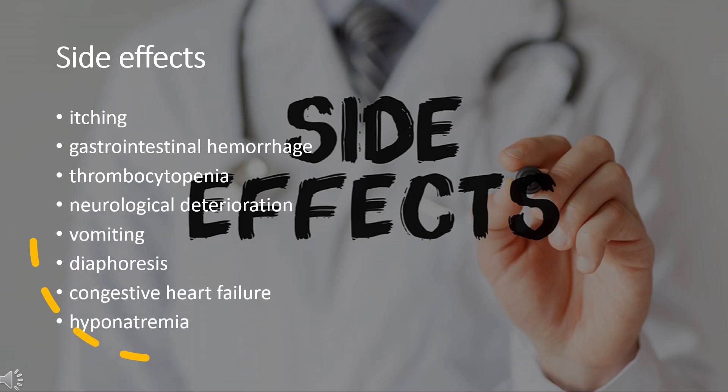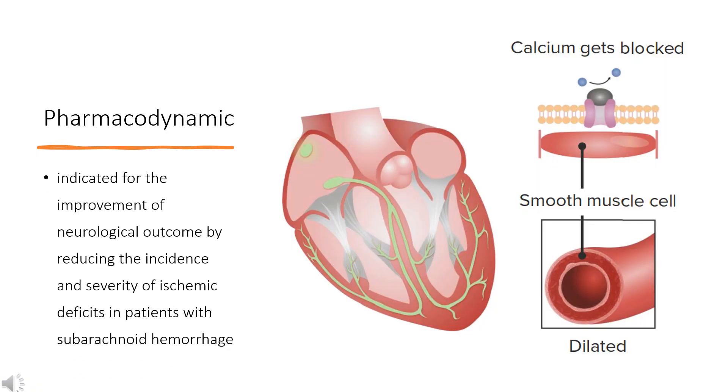The FDA has classified the side effects into groups based on dosage levels at Q4H. For the high dosage group of 90 mg, less than 1% of the group experienced adverse conditions including itching, gastrointestinal hemorrhage, thrombocytopenia, neurological deterioration, vomiting, diaphoresis, congestive heart failure, hyponatremia, decreasing platelet count, disseminated intravascular coagulation, and deep vein thrombosis.